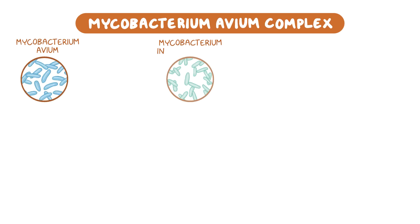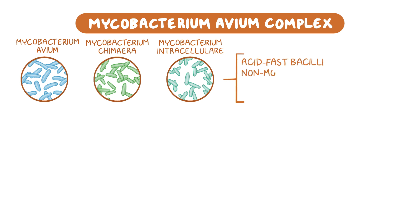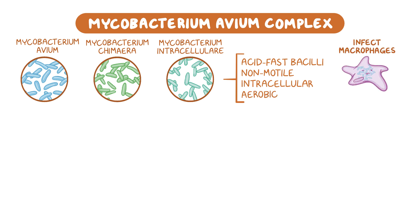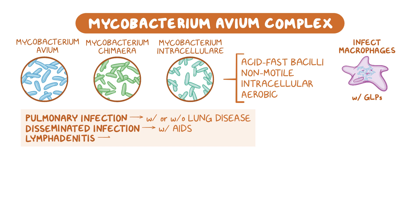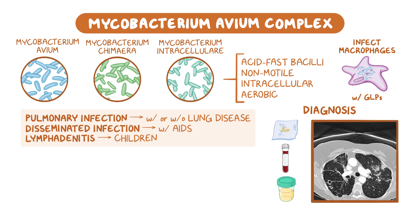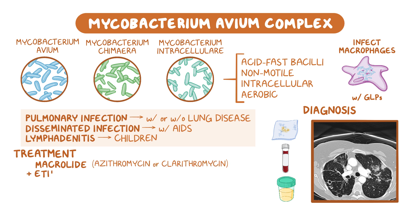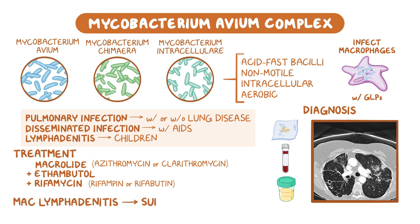As a quick recap: the Mycobacterium avium complex includes M. avium, M. intracellulari, and M. chimera. They're acid-fast bacilli, non-motile, facultative intracellular aerobic bacteria. They infect lung macrophages and survive inside of them with the help of glycopeptolipids, or GLPs, causing three types of infections: pulmonary infection in people with or without underlying lung diseases, disseminated infection in people with AIDS, and lymphadenitis in children. Diagnosis is established by identifying the mycobacterium in sputum, blood, or urine samples, as well as through compatible imaging studies such as a chest CT scan. Treatment regimens typically include a combination of a macrolide such as azithromycin or clarithromycin, plus ethambutol and rifampin for pulmonary and disseminated infections. In MAC lymphadenitis, the affected lymph nodes are surgically excised.